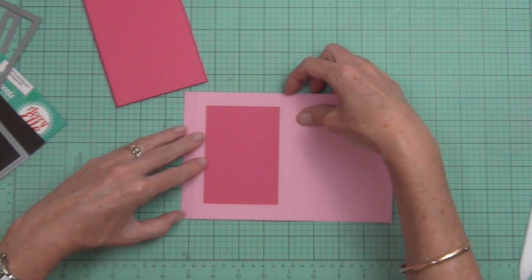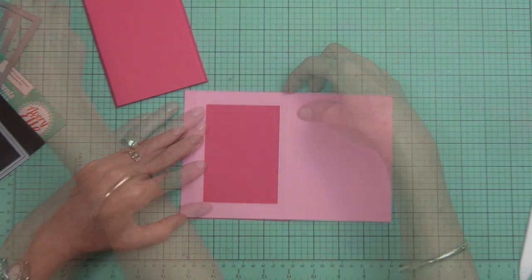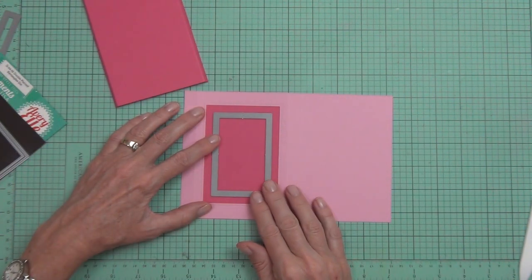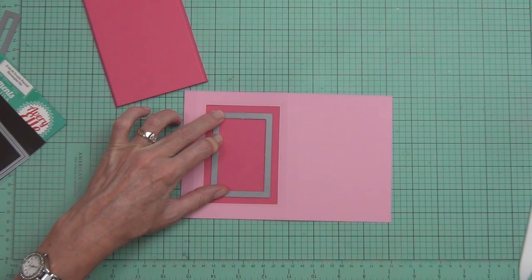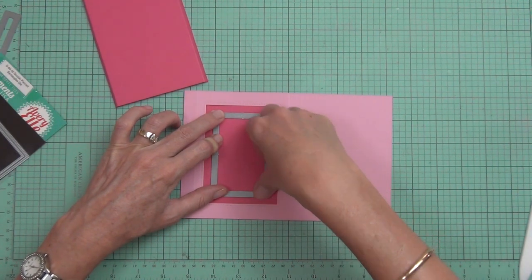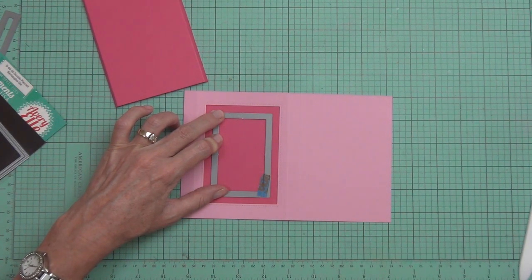I'm just holding the cardstock in place, lining up my dies, and then using some low-tack tape to hold them in place before I run them through the machine.